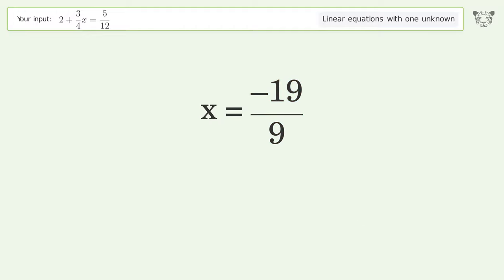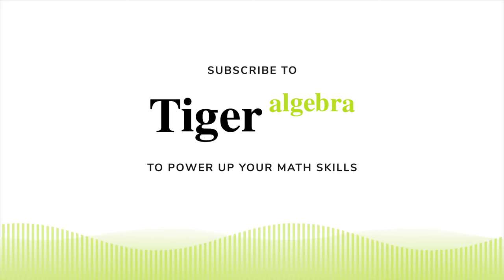And so the final result is x equals negative 19 over 9. Thank you.